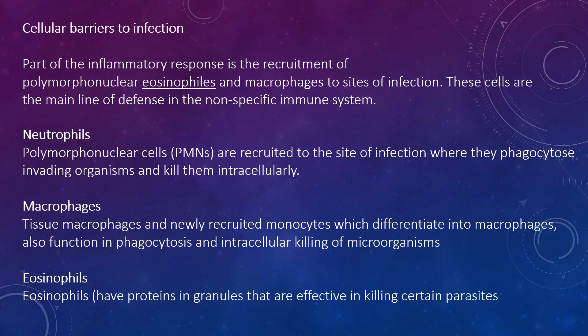Neutrophils are polymorphonuclear cells that are recruited to the site of infection, where they phagocytose invading organisms and kill them intracellularly. They can also contribute to collateral tissue damage that occurs during inflammation. Macrophages and recruited monocytes differentiate into macrophages and function in phagocytosis and intracellular killing of microorganisms. Macrophages also contribute to tissue repair and act as antigen-presenting cells required for induction of specific immune responses. Natural killer cells and LAK cells non-specifically kill virus-infected and tumour cells and are important in non-specific immunity to viral infections and tumour surveillance. Eosinophils contain granules that are effective in killing certain parasites.